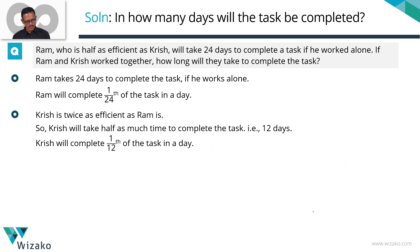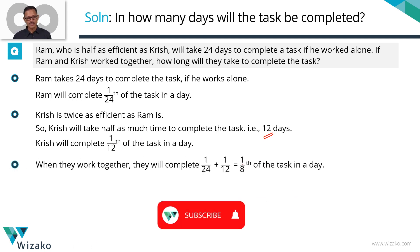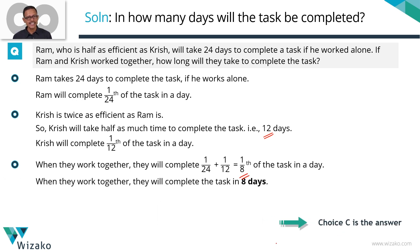To summarize: Ram is half as efficient as Krish, which means Krish is twice as efficient as Ram. Ram takes 24 days; if Krish is twice as efficient, he gets 2 times as much work done in unit time, so Krish takes half as much time — only 12 days. Krish completes 1/12th of the task in a day. Together they complete 1/24 + 1/12 = 1/8th of the task in a day, so it takes 8 days to finish the task. Choice C is the correct answer.